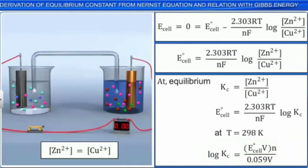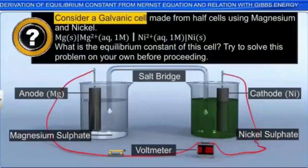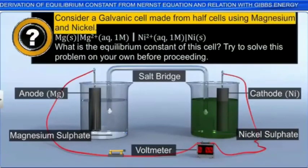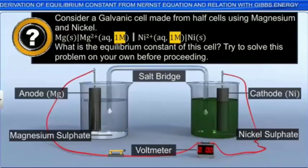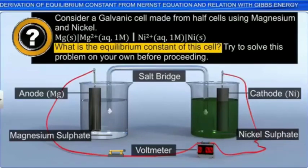Consider a galvanic cell made from half cells using magnesium and nickel. Notice that the ion concentrations are all 1 molar. What is the equilibrium constant of this cell? Try to solve this problem on your own before proceeding.